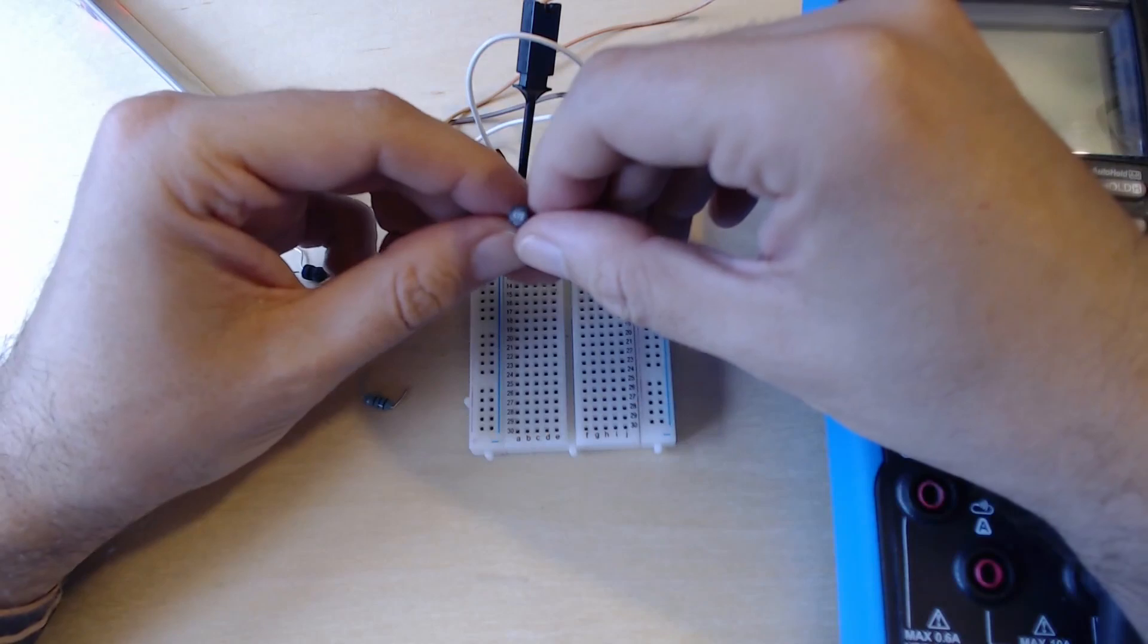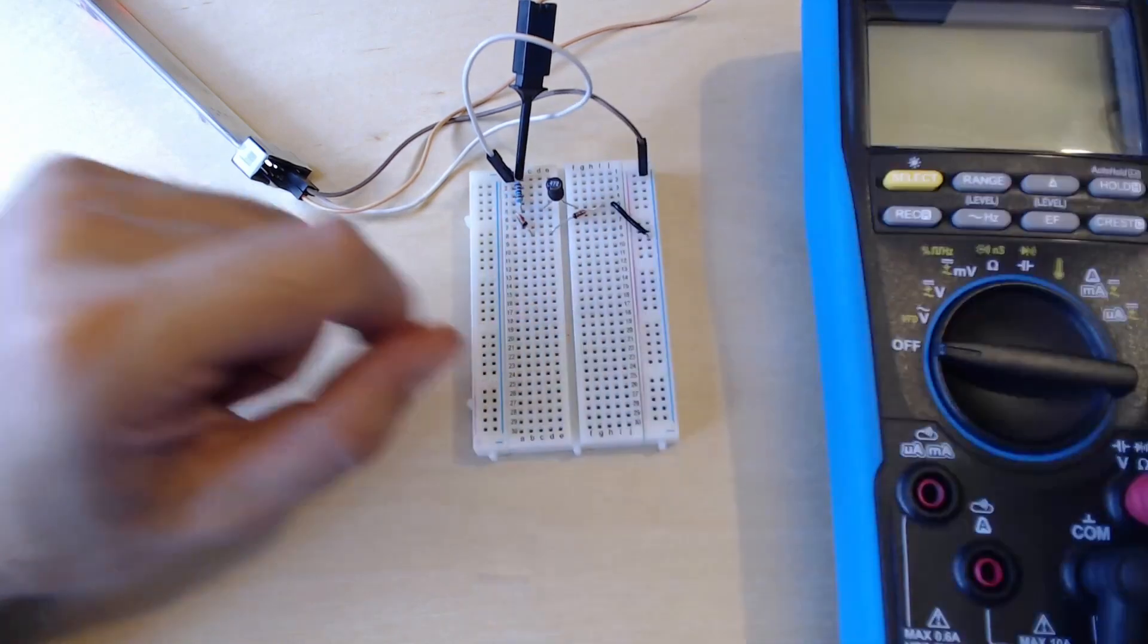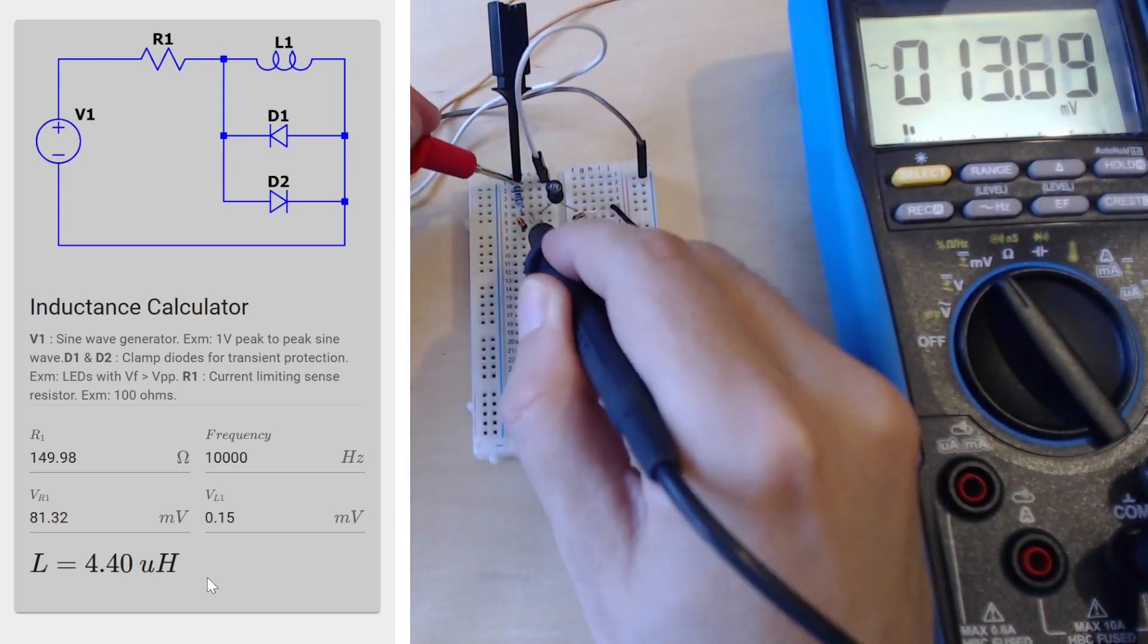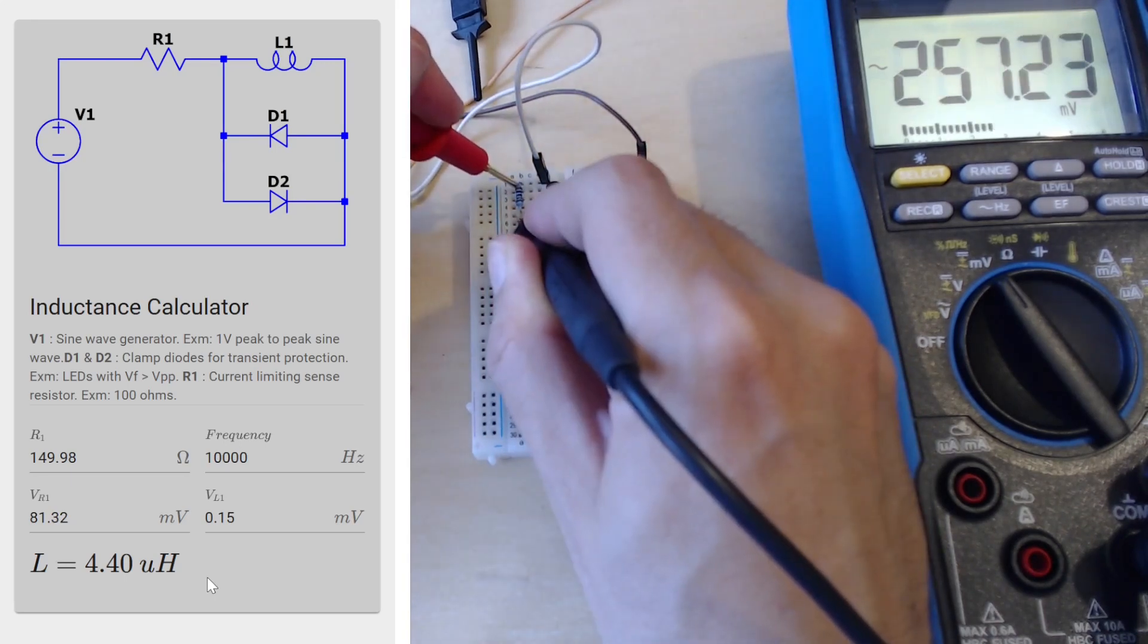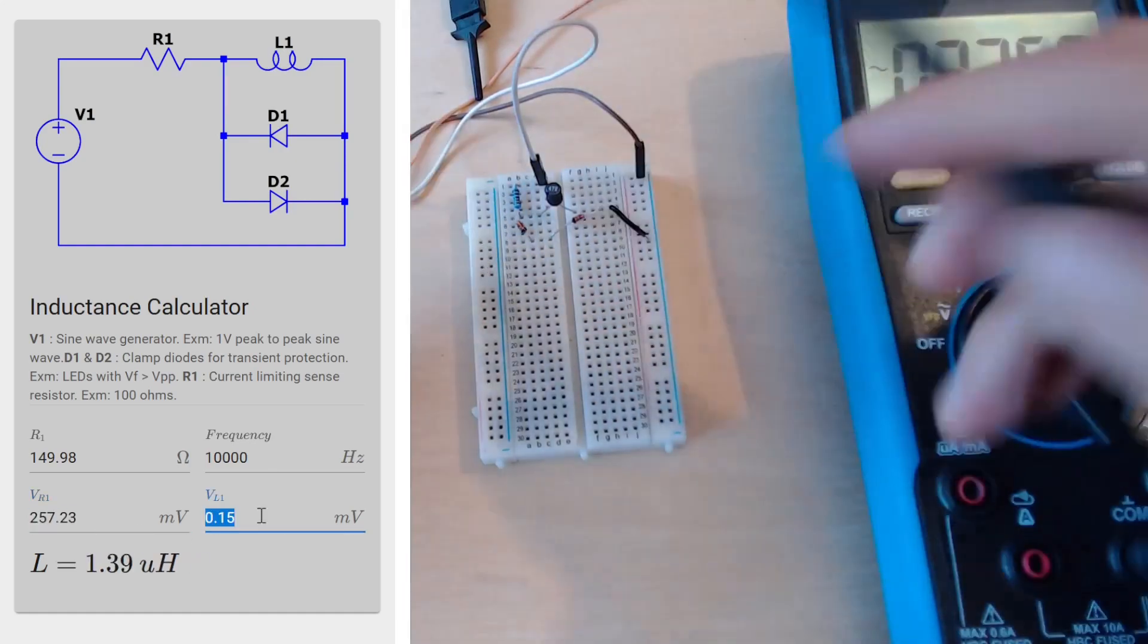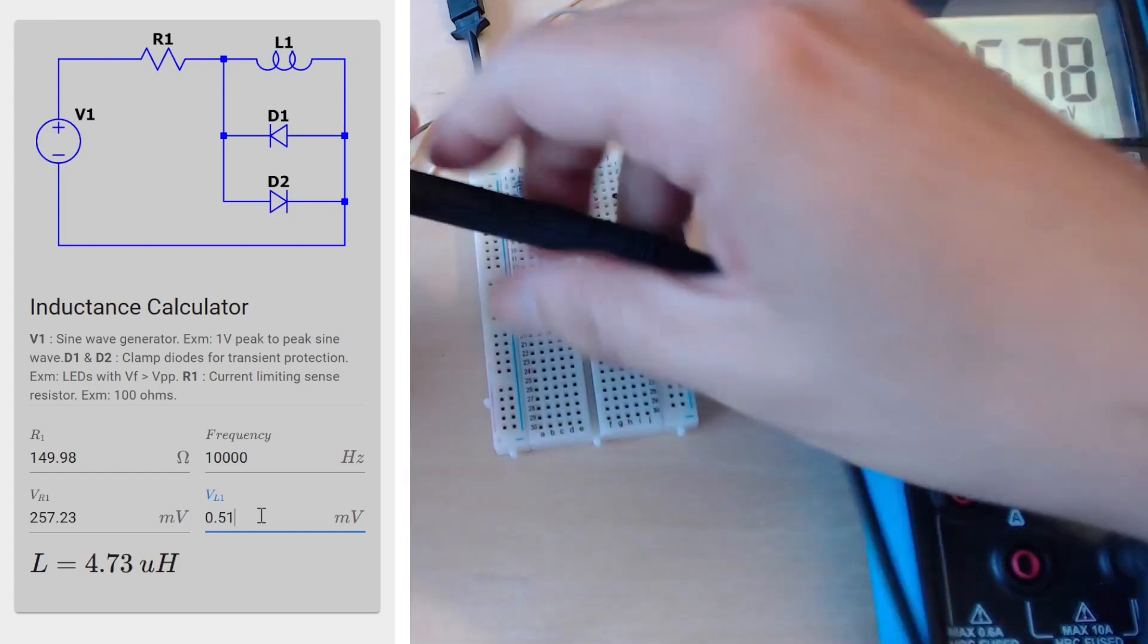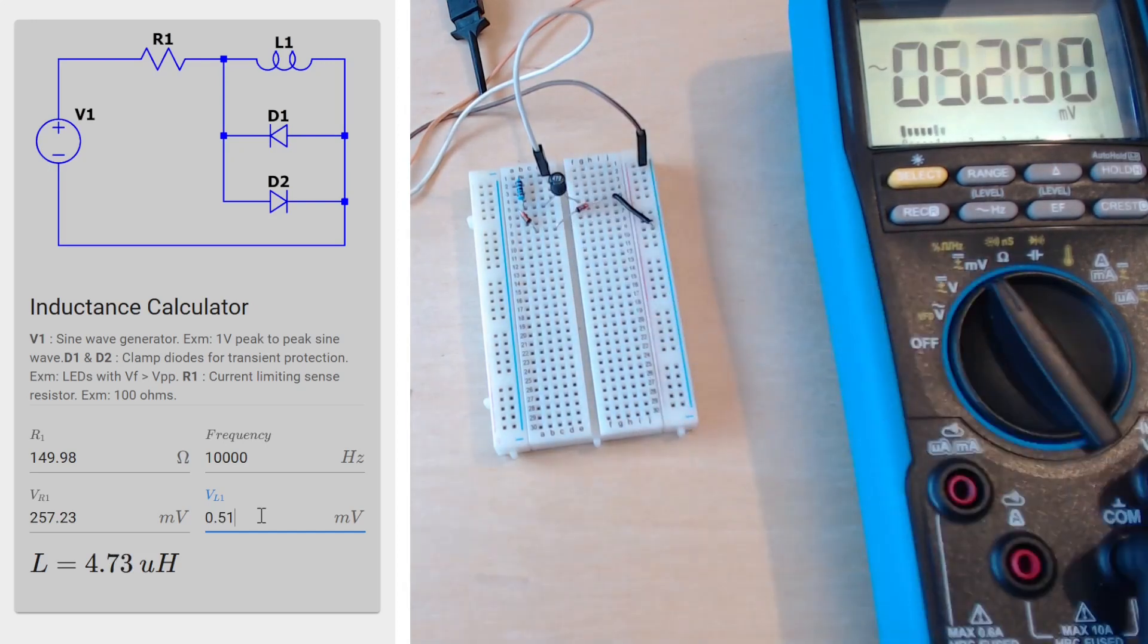That is the 4.7 microhenry one back there again. I'm just going to check my circuit. Yeah it's all good. Now let's do our measurements. Open our tool. The resistor value is the same. I'm just going to measure the voltage across our resistor first. Maybe change this one like this so there's some space for measurement. I can just remove our scope, we don't need this one. Okay, it's 257.23. Let me input that: 257.23. And now let's measure the voltage across our inductor, which was 0.15 millivolts before. You can just measure it from here, it should be fine. 0.51 millivolts. Now it has changed for the better. Now what we are seeing here is 4.73, and that is pretty accurate. That's exactly where it should be.